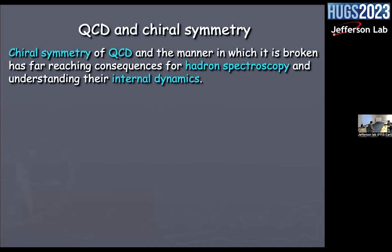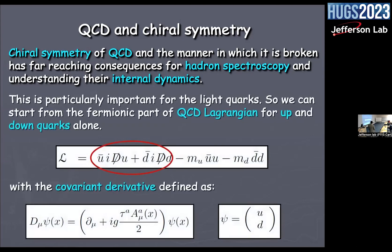We will start talking about QCD, chiral symmetry, and its eventual dynamical breakdown. The chiral symmetry of QCD and the manner in which it is broken has far-reaching consequences for hadron spectroscopy and understanding the internal dynamics of hadrons. This is particularly important for the light quarks, because the masses generated dynamically for the heavier quarks are small compared to the ones they already have in the Lagrangian, and therefore their role becomes different.